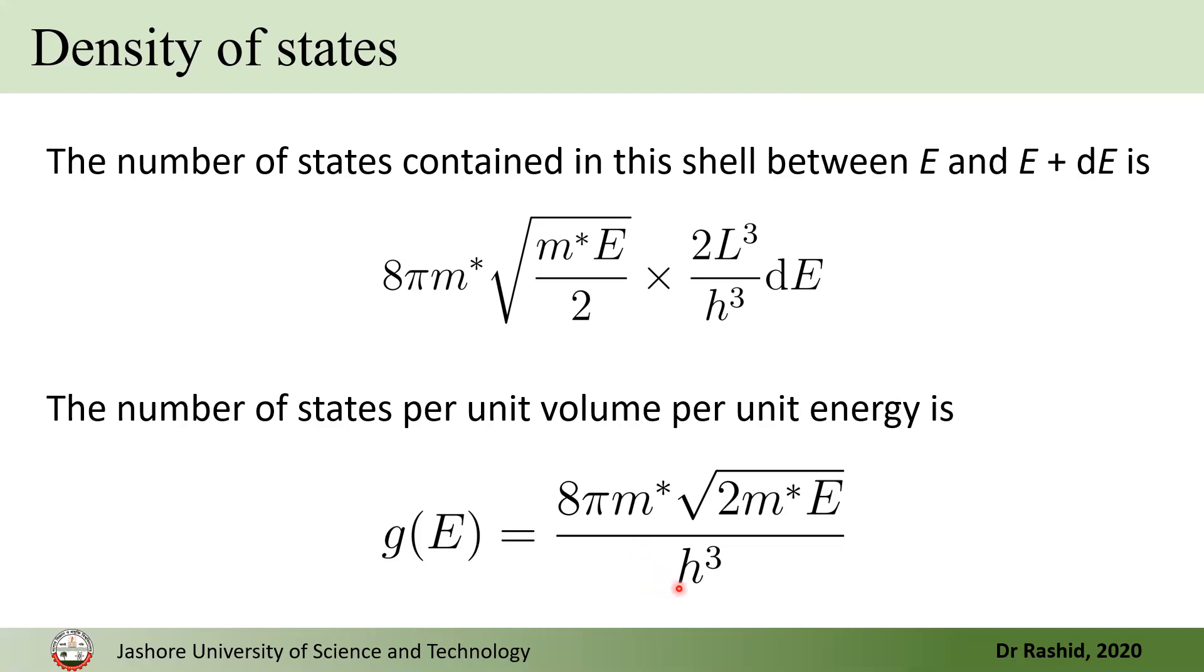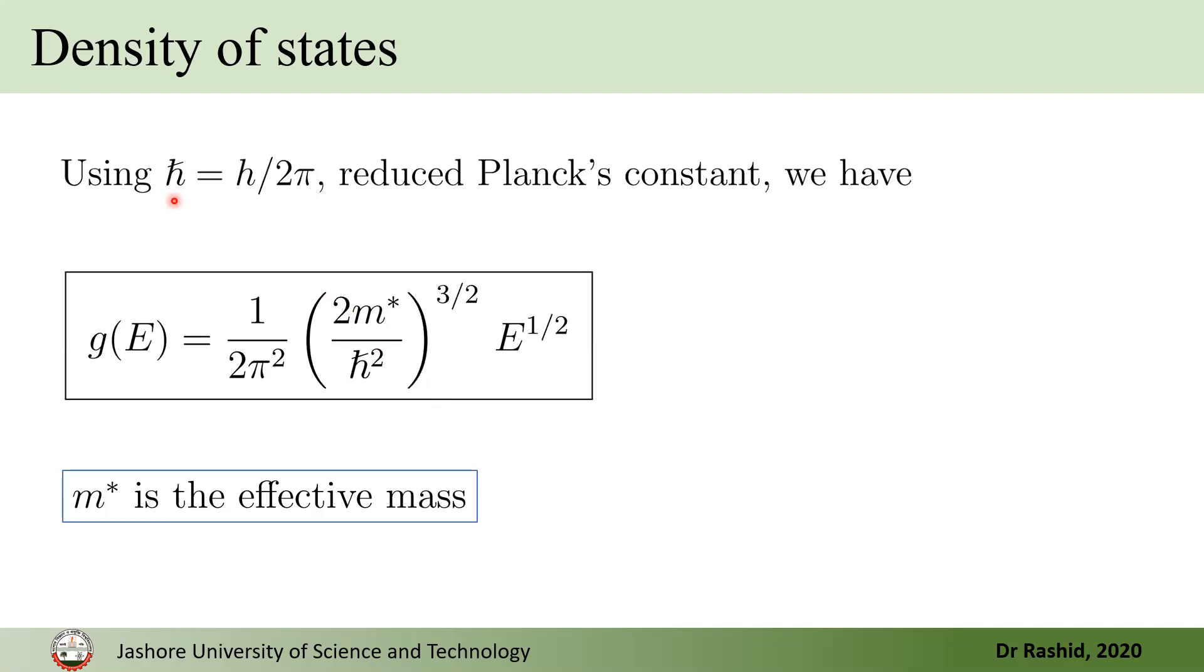So, this is with H, but if we write it with H cut, which is H cut equals H by twice pi, we call it reduced Planck's constant. Then we have this expression for the density of states.